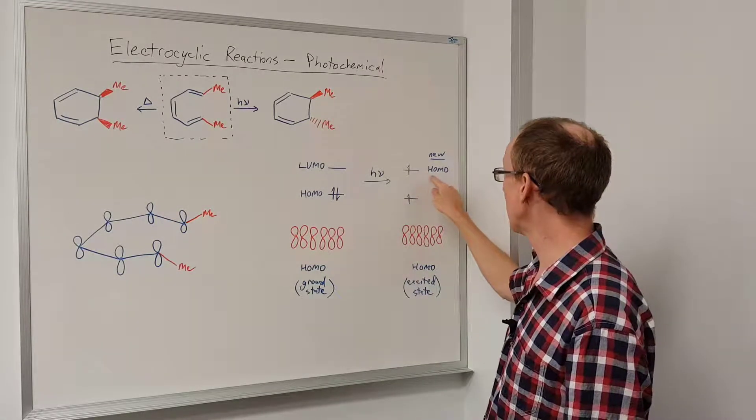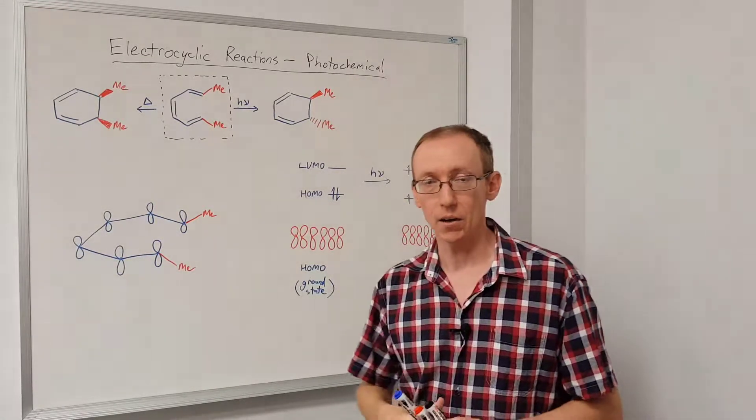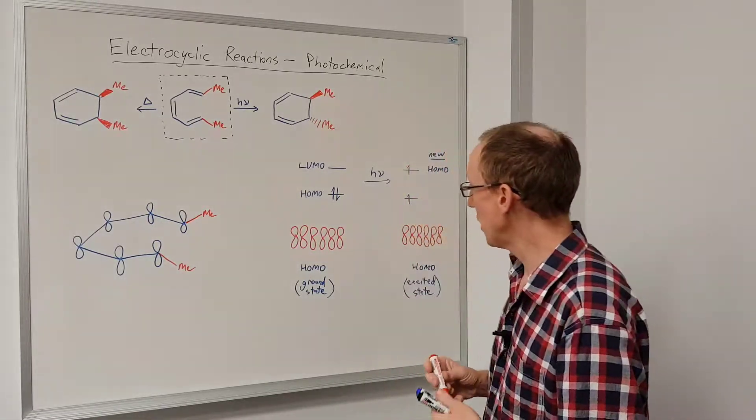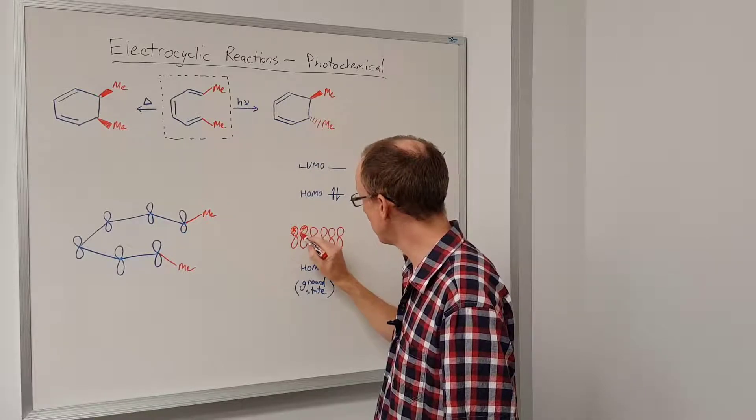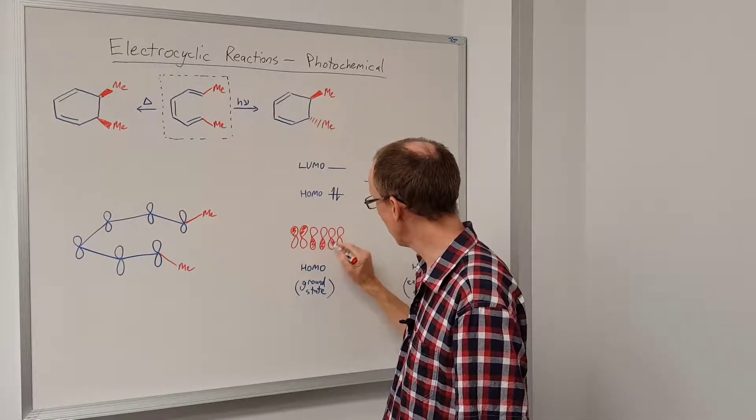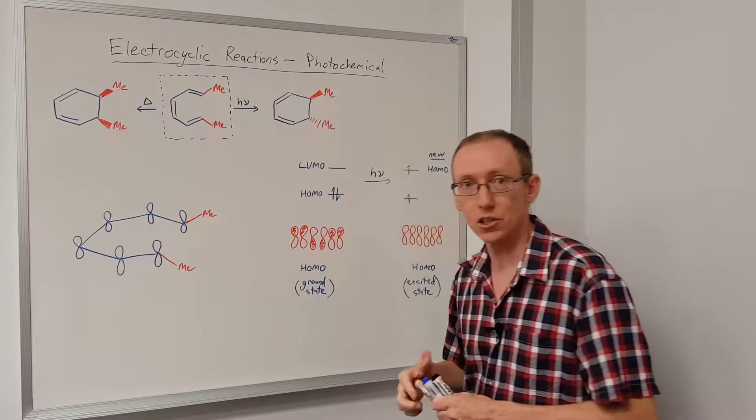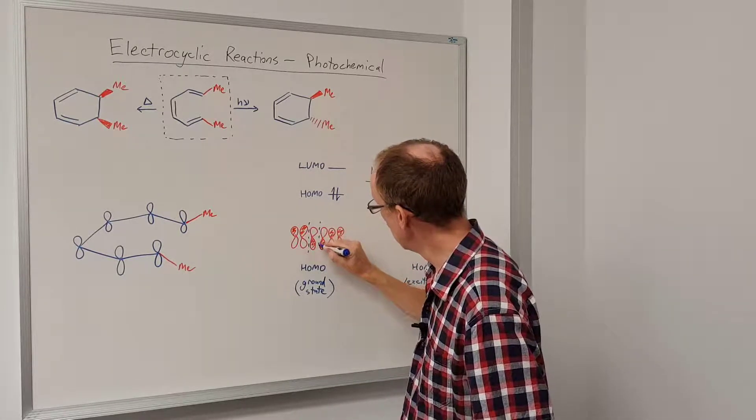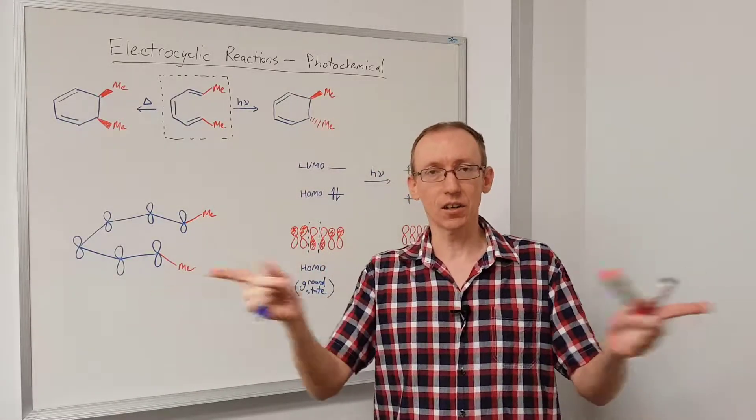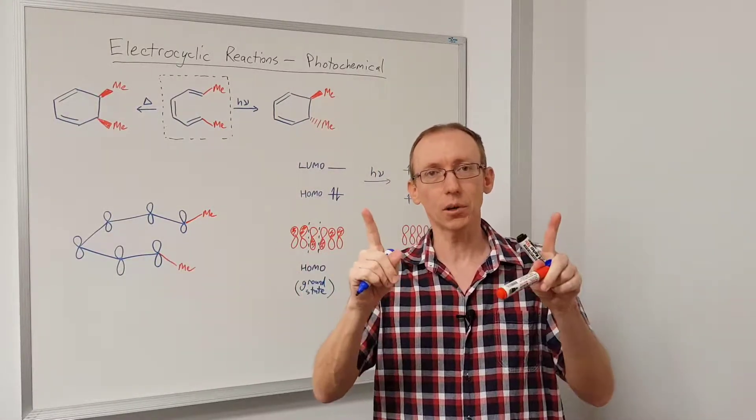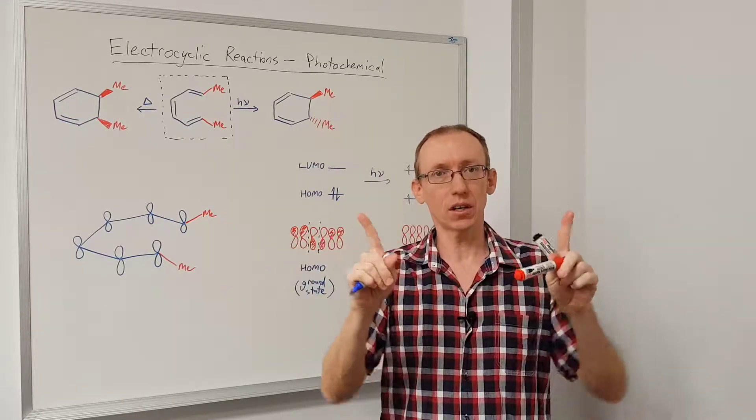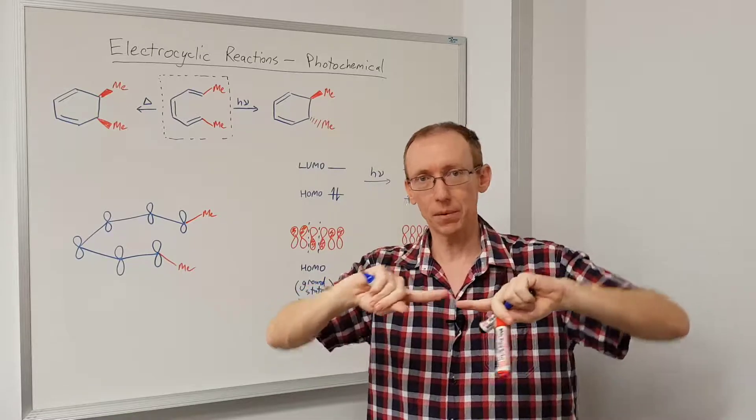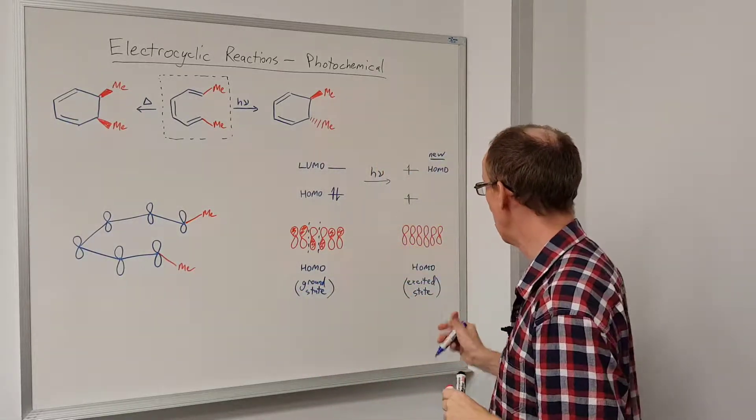So this is going to be the HOMO. Now if we had a look at our molecular orbital diagrams from before, we know that the old HOMO had this arrangement of the phases of the constituent atomic orbitals, and we had two nodes. And that meant that at either end that is undergoing the electrocyclic process, we're going to have to do a disrotatory process to get the two orbitals to come into a favorable interaction.